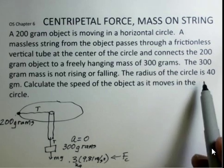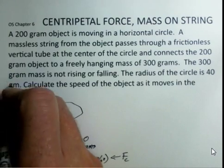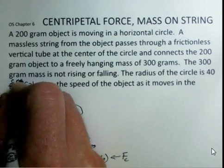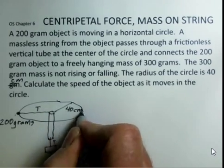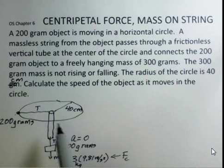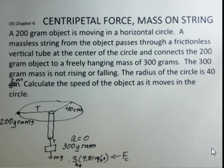So the radius of the circle is 40 centimeters. So 40 centimeters will be part of our calculations, and we want to know what's the speed of this object moving in this circle. It's a pretty direct calculation.